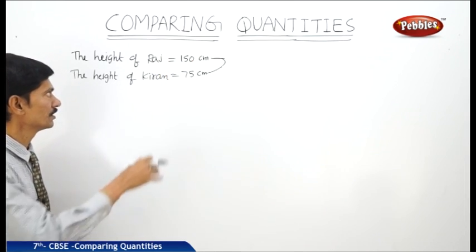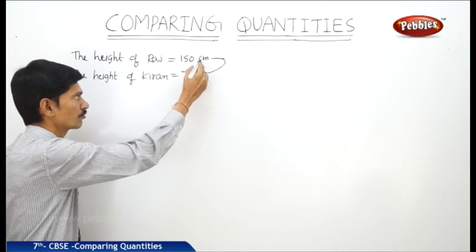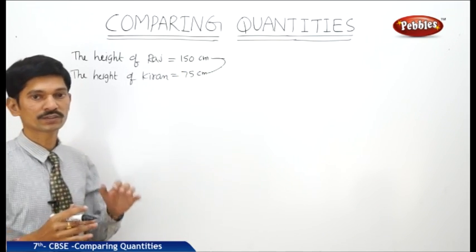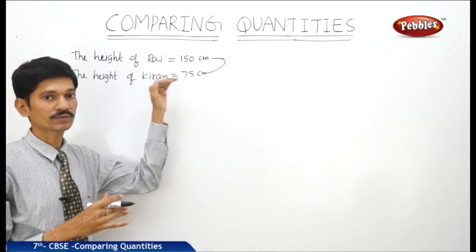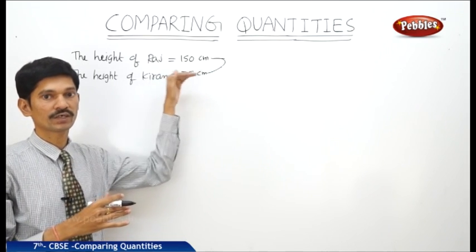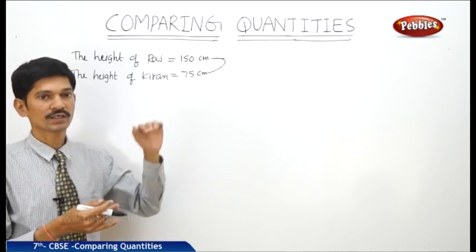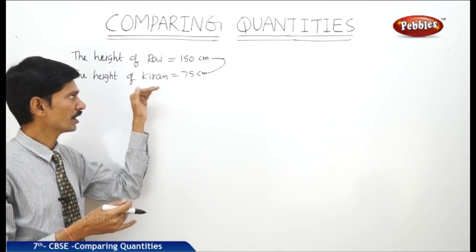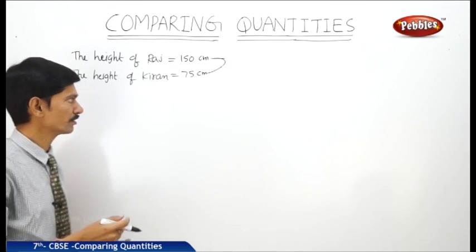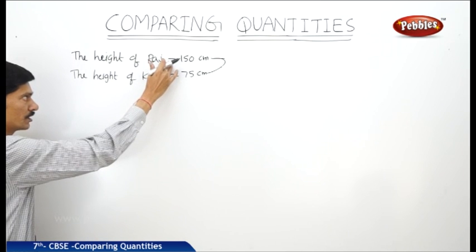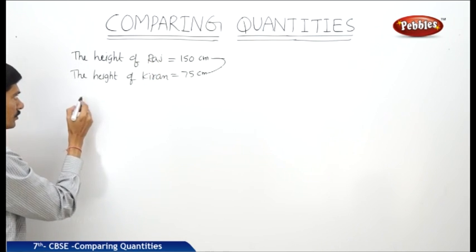We can say that these two quantities can be compared by asking how many times one quantity is of the other quantity, or we can compare how much part one quantity is of the other quantity. These two quantities can also be compared using the ratio.